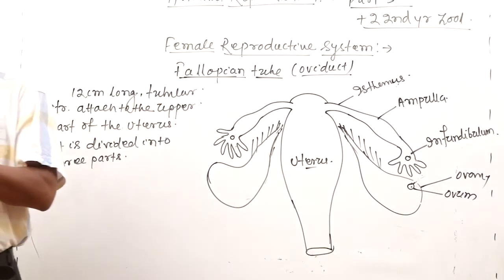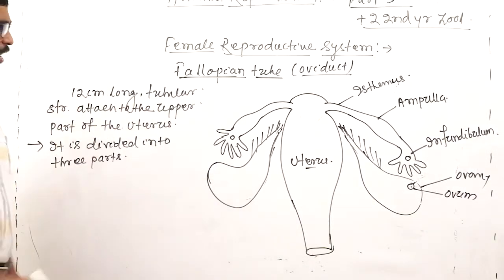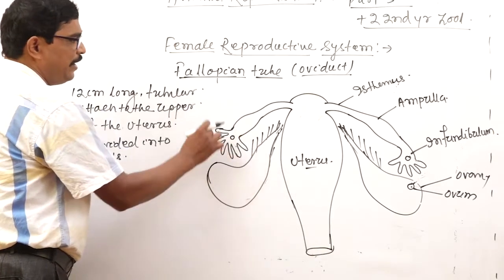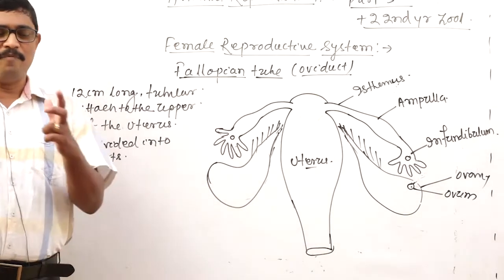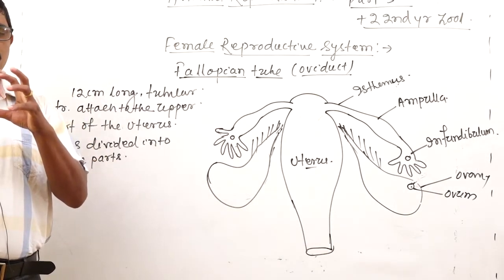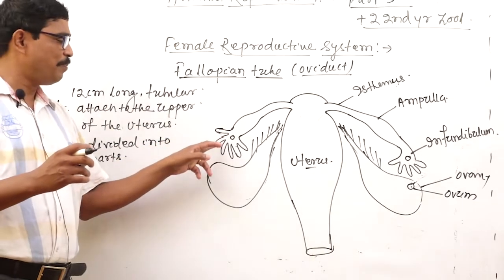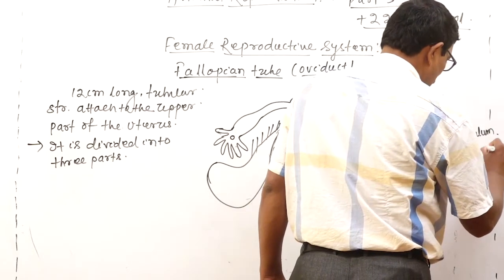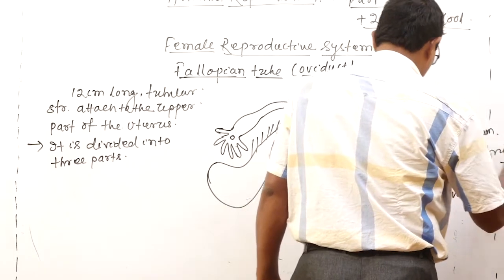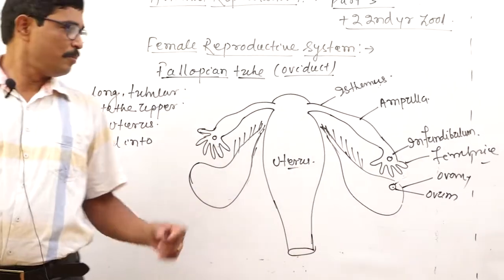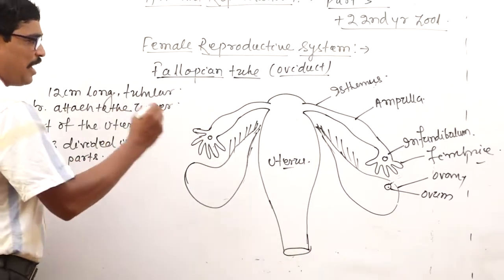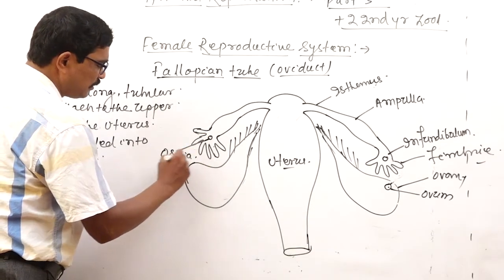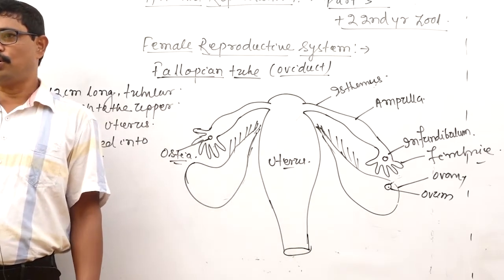The proximal end is a funnel-like structure called the infundibulum. Around it are finger-like projections called fimbriae. The central opening is called the ostium.